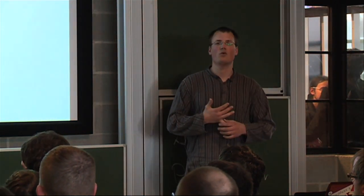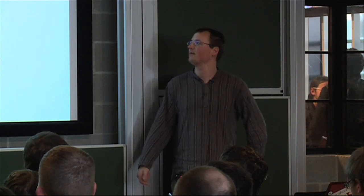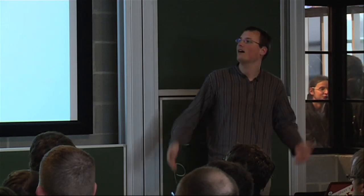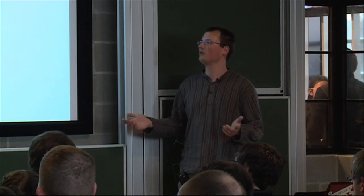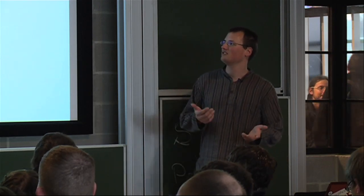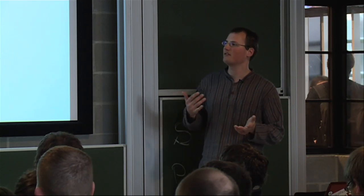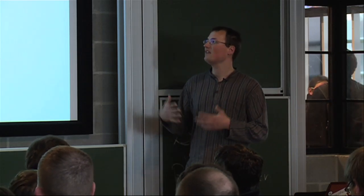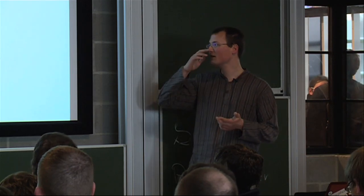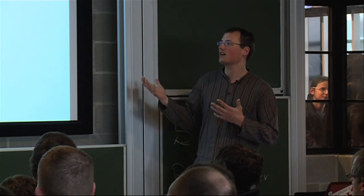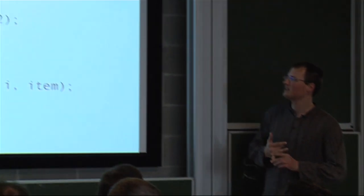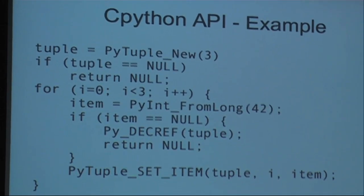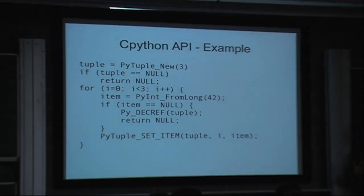Just to give you an example of what's involved in using the CPython API, this all this code does is create a tuple of three items long with three times the number 42 in. But the amount of stuff you need to do is, first you need to create a new tuple object. Then if that fails, that's still simple enough to bail out. Then you have to go and populate it. So you have to create three new objects, even though they're three times the same object. You could just increase the reference count of that same object if you really wanted, because they probably end up being the same object. But at that point, if you then fail, you have to remember to decrease the reference count on your tuple object, because otherwise you're going to leave that object around.